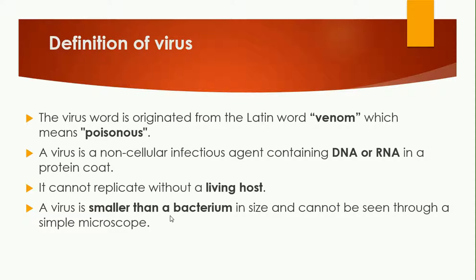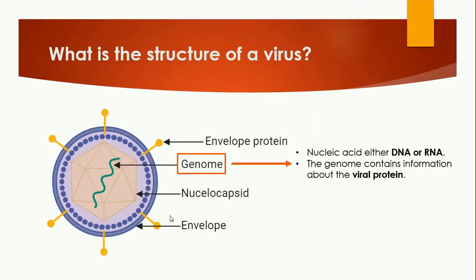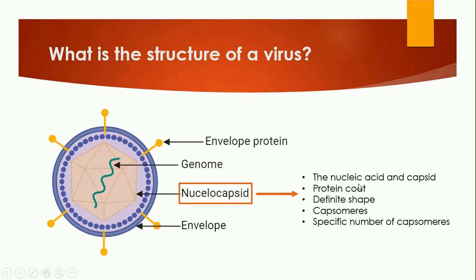If you want to observe a virus, you need to use an electronic microscope. Now, talking about the structure of a virus — here you can see the diagram of a simple virus. The central part is the genome, which consists of DNA or RNA. The genome contains information about the viral proteins. The DNA present in the virus produces proteins that are specifically viral proteins.